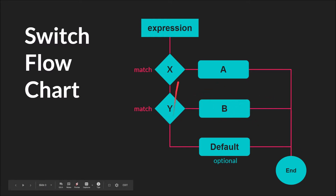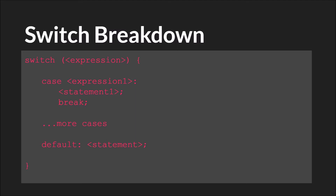If there are no matches and you have a default option, then it will do that and end. This is not required, so you could skip it — just have it check, check, and if there's no match, go down and end. Unfortunately, the most complicated part of a switch statement is not understanding it or how to use it, but actually typing it correctly in code.